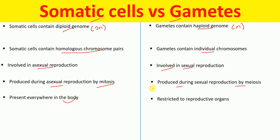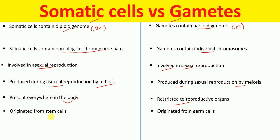Somatic cells are present everywhere in the body, whereas gametes are restricted to reproductive organs. Somatic cells originate from stem cells, whereas gametes originate from germ cells.